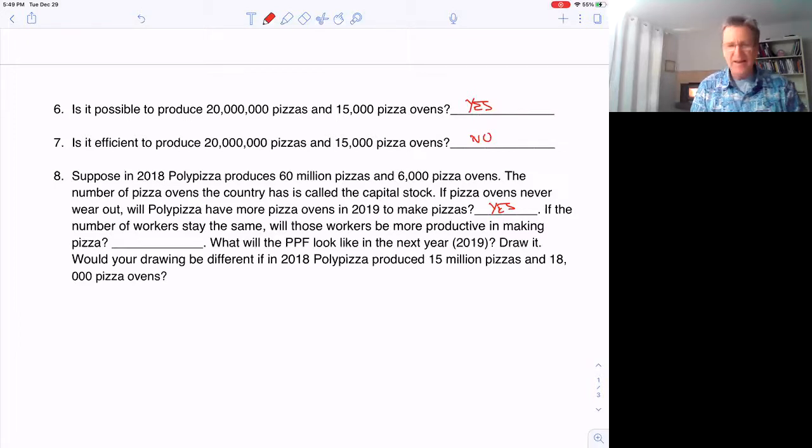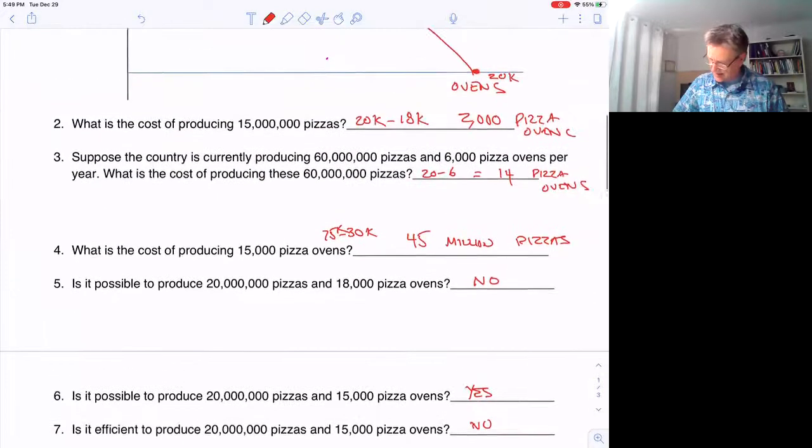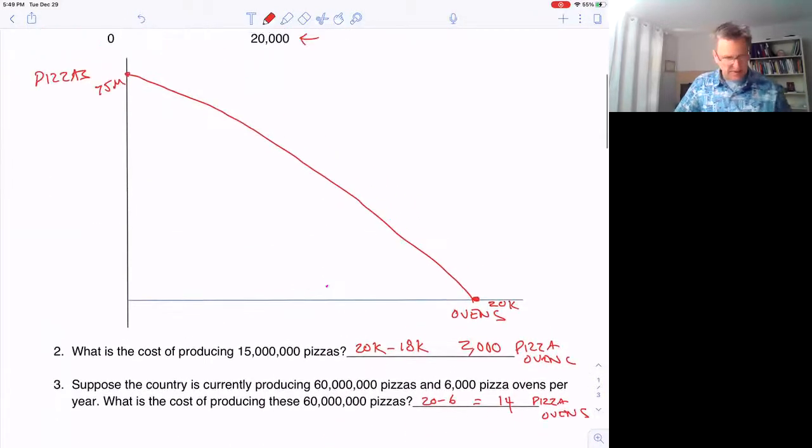And the reason is, with these more pizza ovens, the workers can be more productive in making pizzas. So what will the PPF look like in 2019? Well, we would have 60 million pizzas and 6,000 pizza ovens.